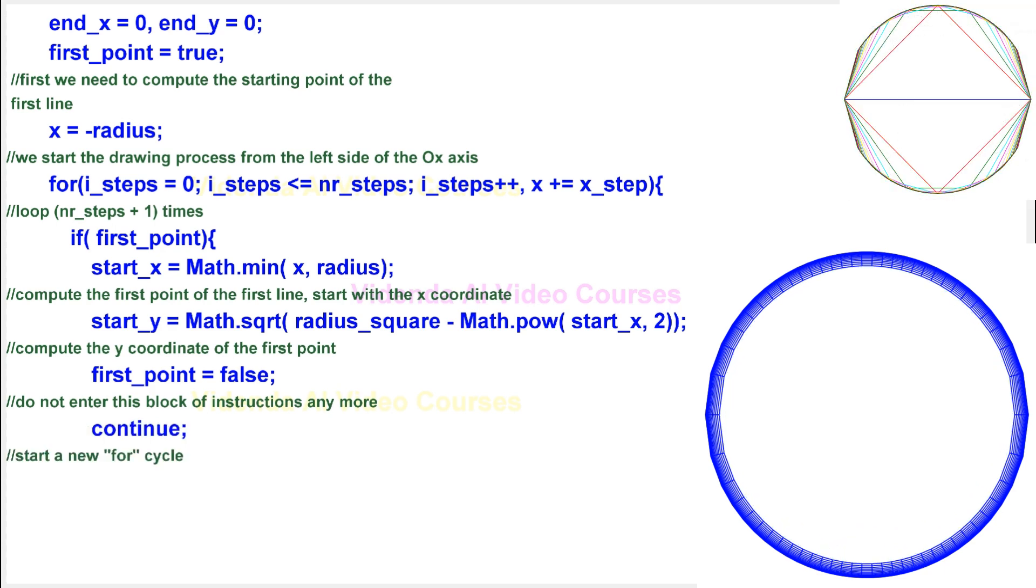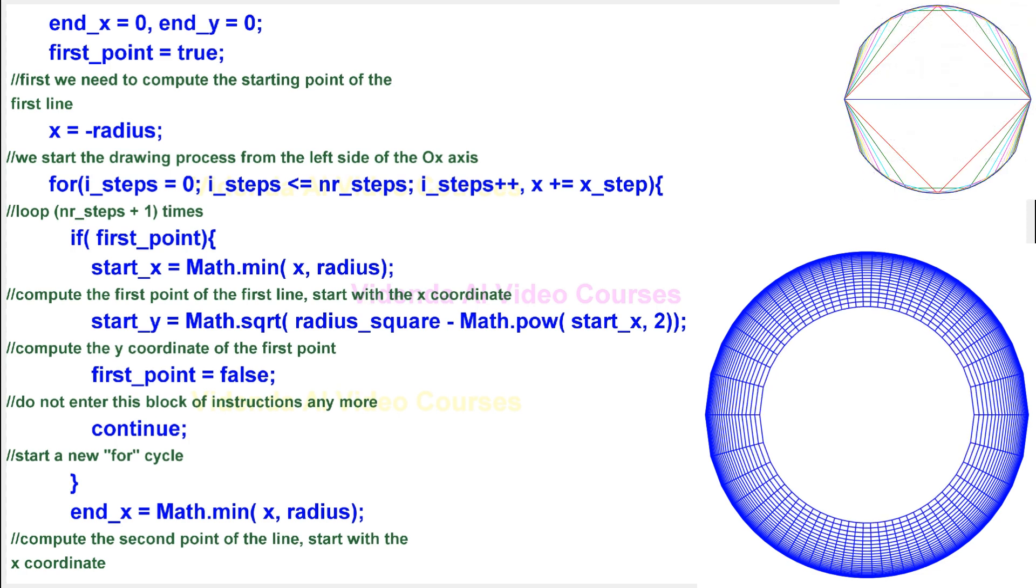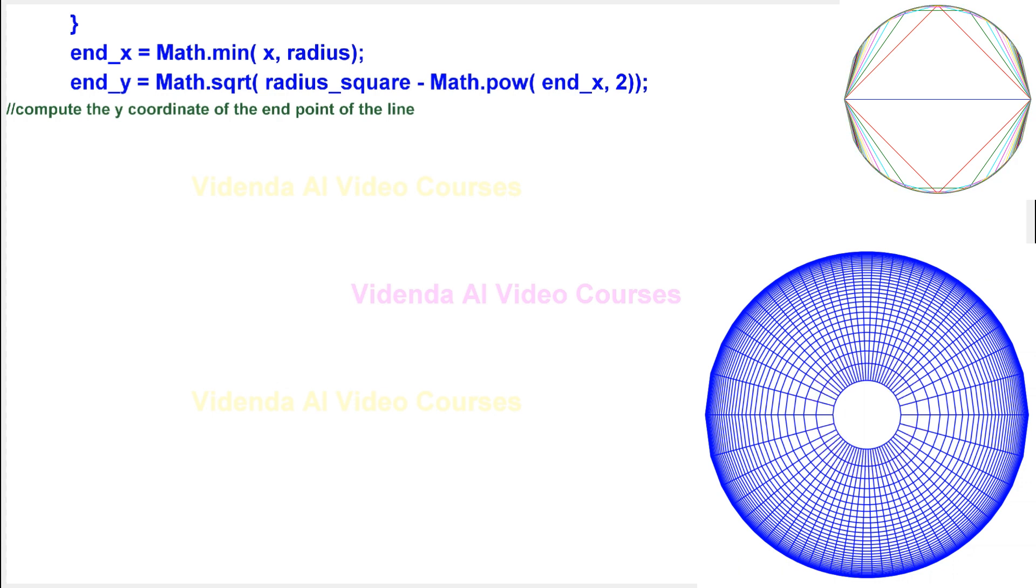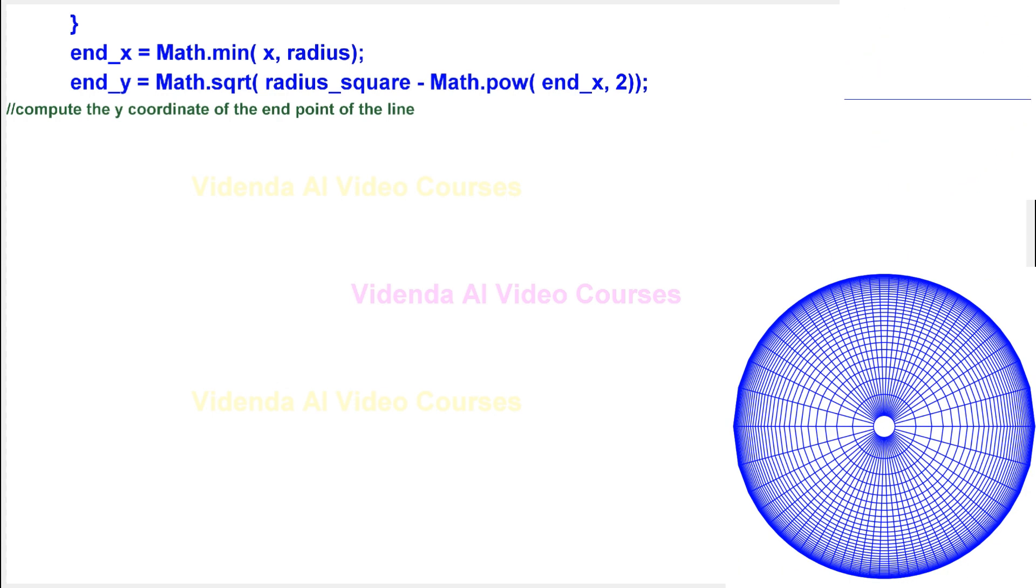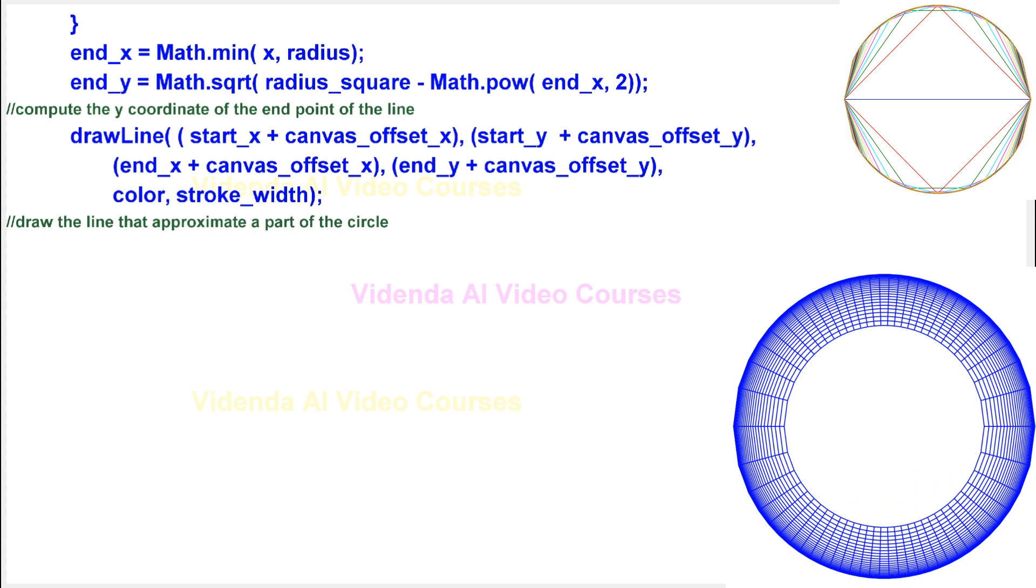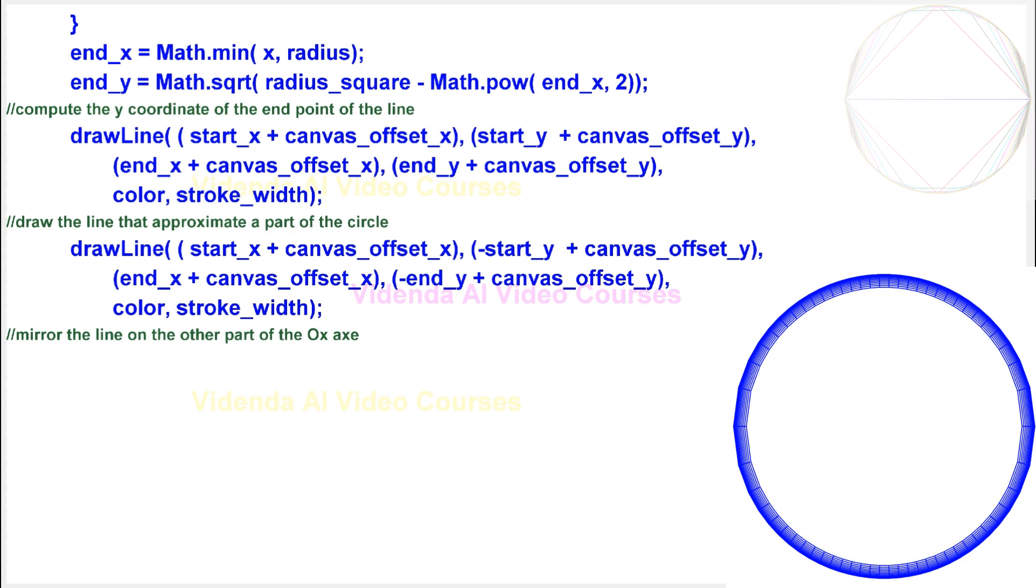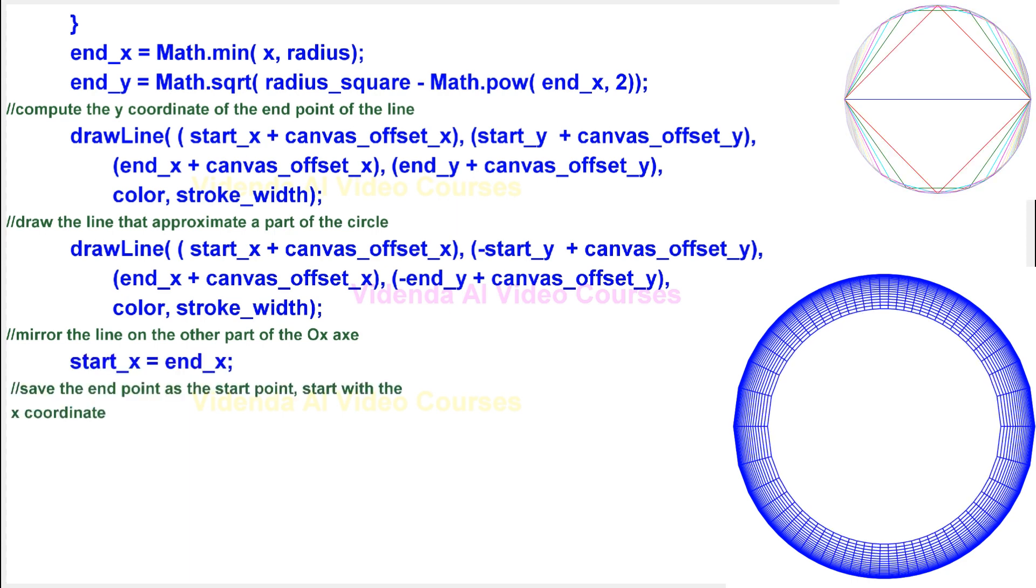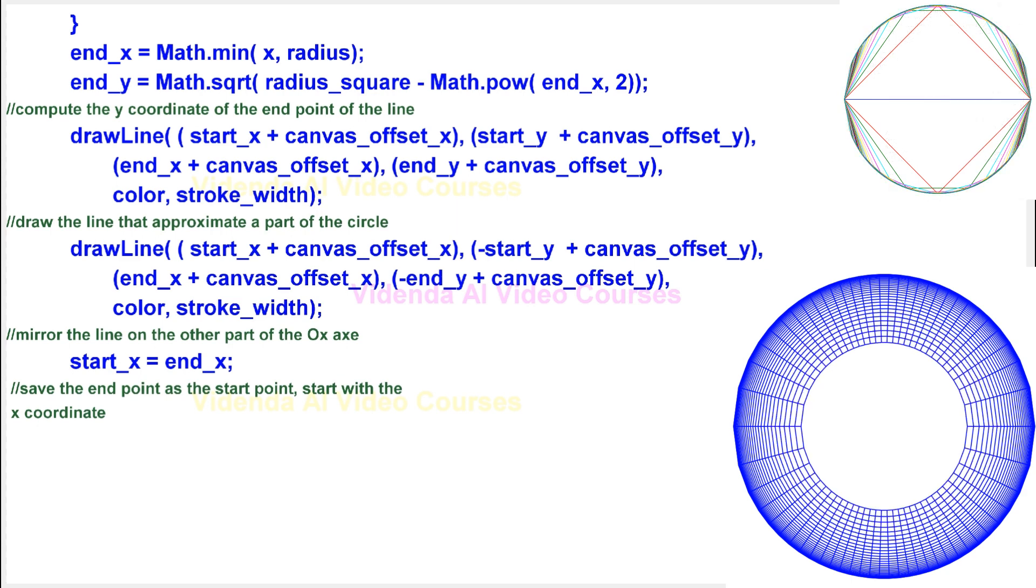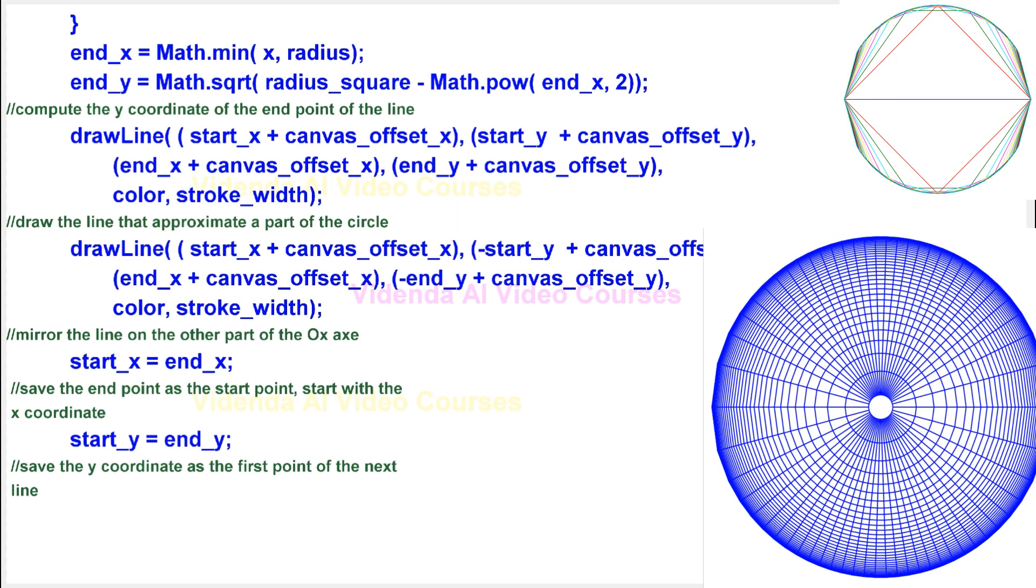Start a new for cycle. Compute the second point of the line. Start with the x-coordinate. Compute the y-coordinate of the end point of the line. Draw the line that approximates a part of the circle. Mirror the line on the other part of the ox axis. Save the end point as the start point. Start with the x-coordinate. Save the y-coordinate as the first point of the next line.